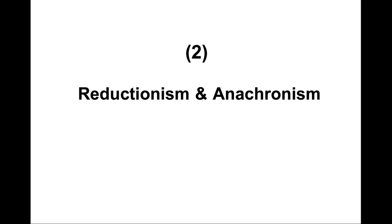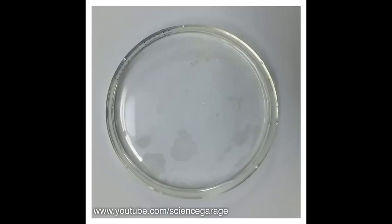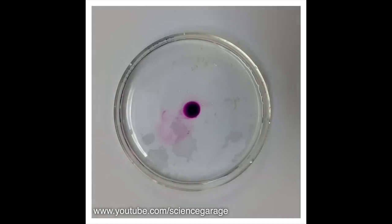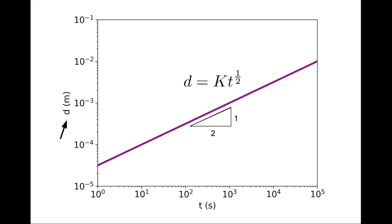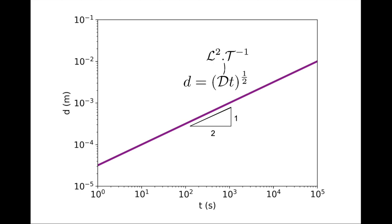A crystal of potassium permanganate is placed in a petri dish of water, and a slow diffusion is tracked by time-lapse photography. For an ideal diffusion process, the area of the patch grows linearly with time, so the radius grows like the square root of time. The dimensions of the prefactor k are L·T^(−1/2). To avoid a fractional exponent, one usually defines k as the square root of a diffusion coefficient D, with dimensions L²·T^(−1). The coefficient of diffusion, or diffusivity, is a kinematic parameter — set here at 10^(−9) m²/s, which is also equal to 3.6 mm²/hour, typical for molecular solutes in water.